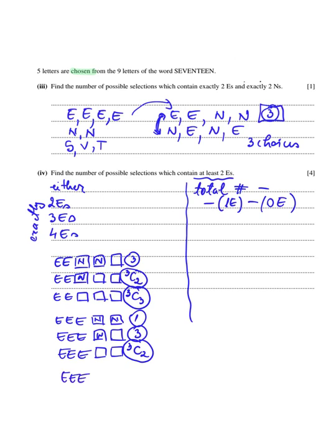If I have four E's, then on the last position I need to choose one letter. Since two N's count as one choice, I need to choose one out of four letters: N, S, V, T, giving me four choices. Now let's add up those numbers: 3 + 3C2 + 3C3 = 3 + 3 + 1 = 7 for exactly two E's. For exactly three E's: 1 + 3 + 3C2 = 7. For exactly four E's: 4. Altogether, 7 + 7 + 4 = 18 ways.